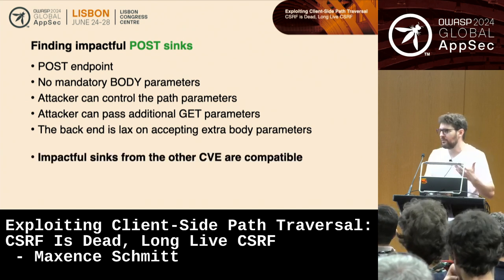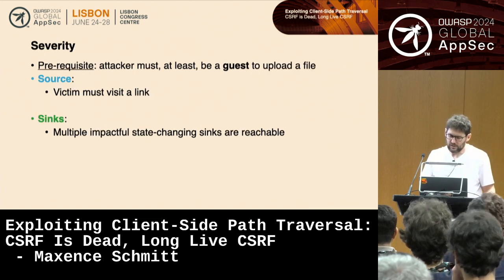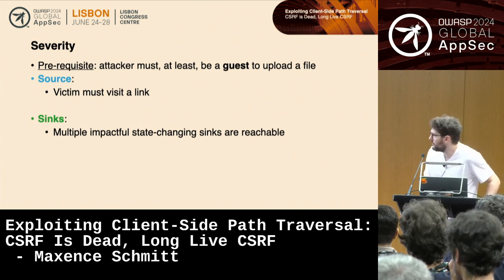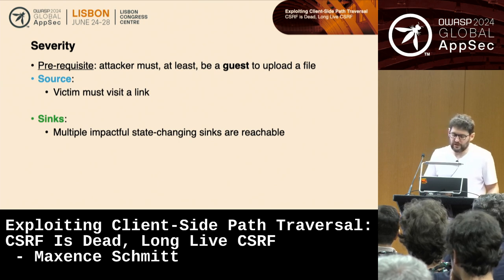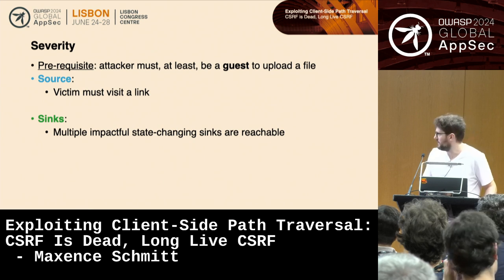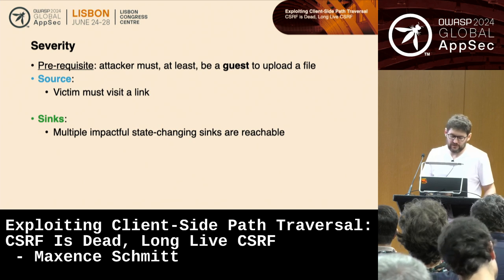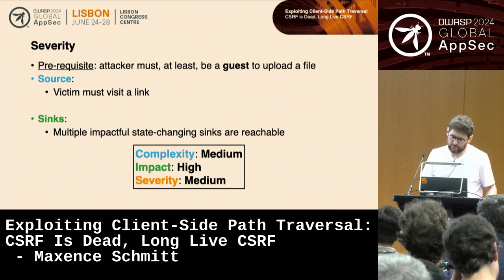This is a CSPT-to-CSRF with a POST sink — the same restrictions as the previous CVE, so all the impactful endpoints found before are compatible. The same impact applies: we can get RCE if needed. The only difference is the attacker must be allowed to upload a file, so they must be at least a guest. As a guest they can upload a file, share the link with the victim, and it becomes exploitable — so we rate this as medium severity, since it requires an additional step.